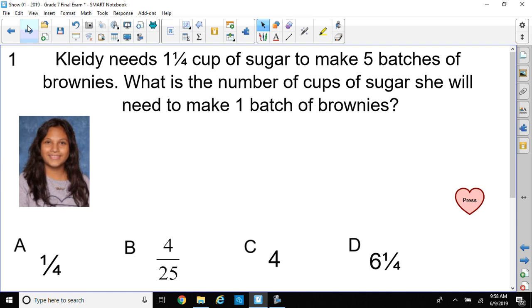Okay, here's our first question. Kaleidi needs one and one-fourth cup of sugar to make five batches of brownies. What is the number of cups of sugar she will need to make one batch of brownies?